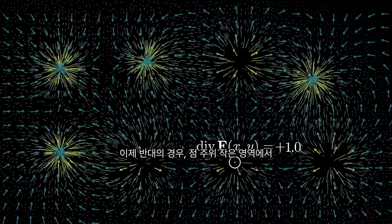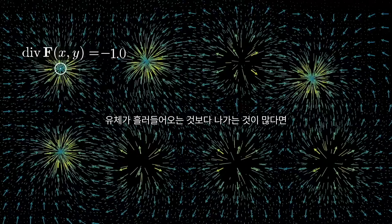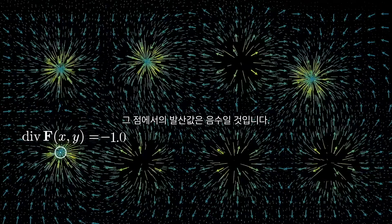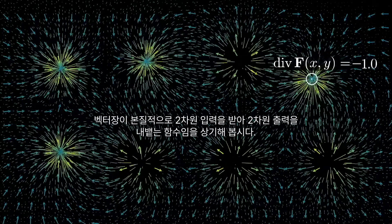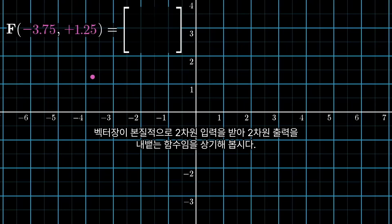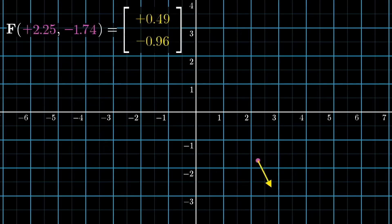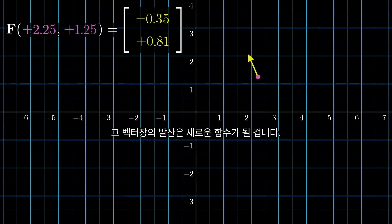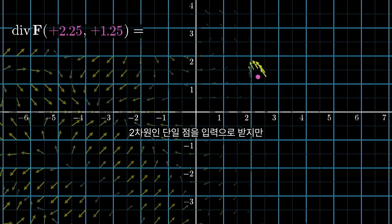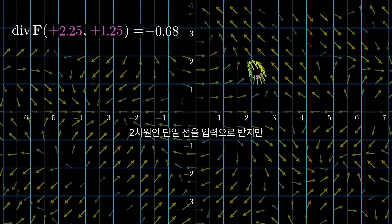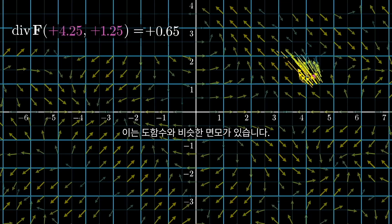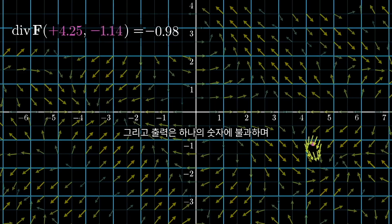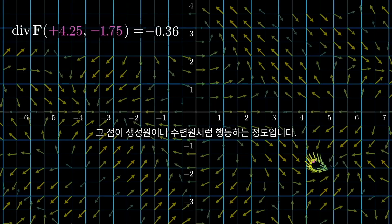On the flip side, if in a small region around a point there seems to be more fluid flowing into it than out of it, the divergence at that point would be a negative number. Remember, this vector field is really a function that takes in two-dimensional inputs and spits out two-dimensional outputs. The divergence of that vector field gives you a new function — one that takes in a single 2D point as its input, but its output depends on the behavior of the field in a small neighborhood around that point. In this way, it's analogous to a derivative, and that output is just a single number measuring how much that point acts as a source or a sink.